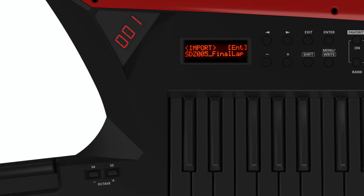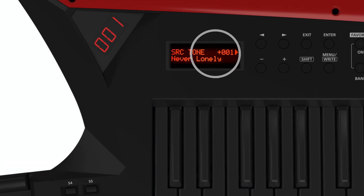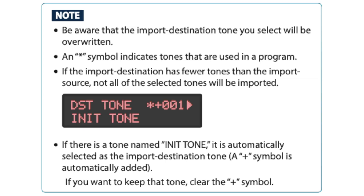Press the cursor right button and use the minus and plus buttons to select the import destination tone, then press enter — you'll see a little plus symbol. Be aware that the import destination tone you select will be overwritten. An asterisk symbol indicates tones that are used in a program. If the import destination has fewer tones than the import source, not all of the selected tones will be imported. If there is a tone named init tone, it is automatically selected as the import destination tone and a plus symbol is automatically added. If you want to keep that tone, clear the plus symbol.